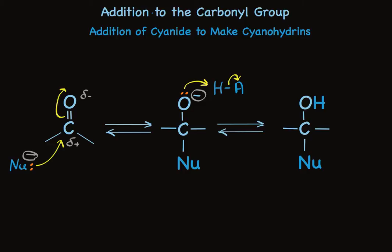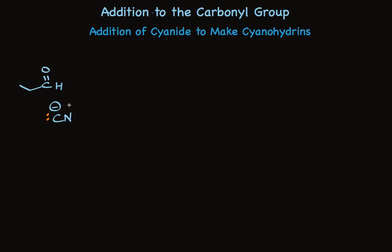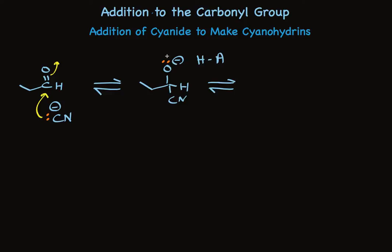Cyanide addition to carbonyl to make a cyanohydrin fits this picture. In cyanide ion, the negative charge is on carbon along with the lone pair of electrons. That pair adds to the carbonyl carbon as the pi bond breaks. This is a reversible addition, and in a subsequent step, oxygen is protonated to make the cyanohydrin. The equilibrium favors product formation when there are significant amounts of cyanide present.